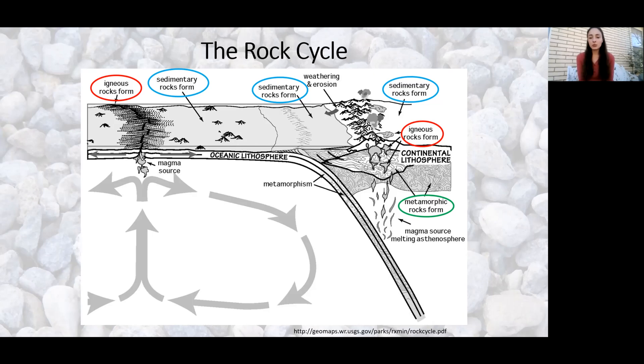You can also see that igneous rocks are forming from the volcanoes that are erupting along the continental edge of the subduction zone. This heat and pressure isn't only causing volcanic activity, but it is also causing deformation in the continental rocks underneath the surface. This is shown here by these squiggly lines that are metamorphic rocks.